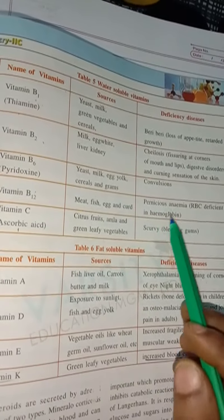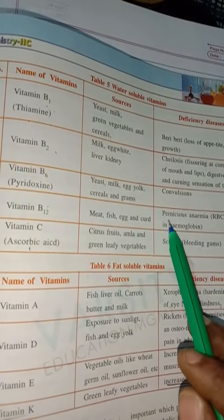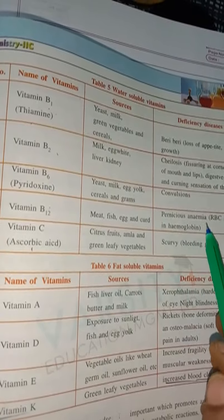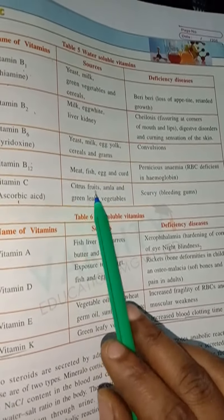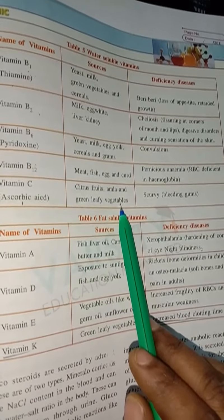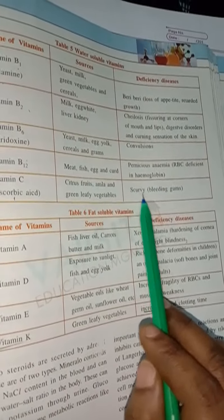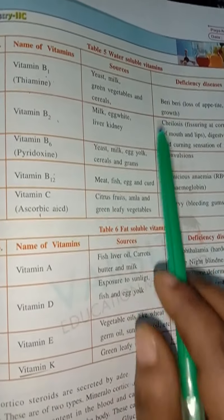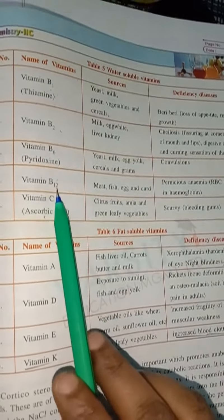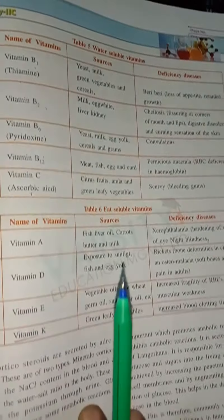Vitamin B12 is present in meat, fish, eggs, and curd. Its deficiency causes RBC deficiency in hemoglobin — pernicious anemia. Vitamin C (ascorbic acid) is present in all citrus fruits, amla, and green leafy vegetables. Its deficiency causes scurvy — bleeding gums. These are all the water-soluble vitamins with their sources and deficiency diseases.